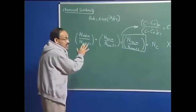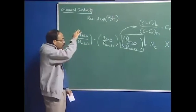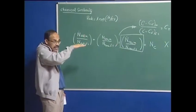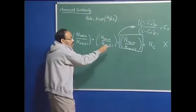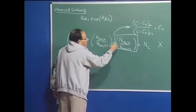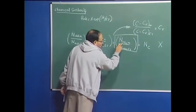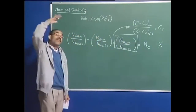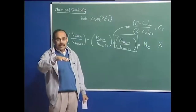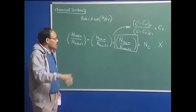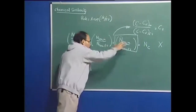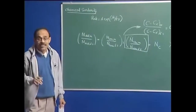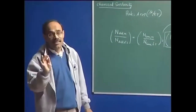The order is: geometrical similarity, then dynamic similarity, then thermal similarity, then chemical similarity. Chemical or mass transport will depend on the absolute temperature as well as convection, the fluid flow part. Only when we can talk about fluid flow and when we talk about thermal similarity or the role of temperature, only then can we possibly talk about chemical similarity. But we understand that it is going to be extremely difficult to carry out any chemical similarity studies.